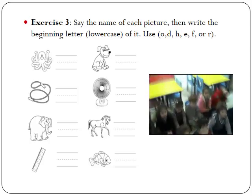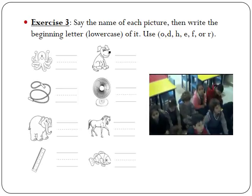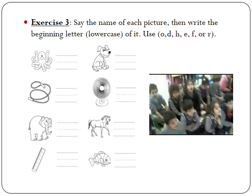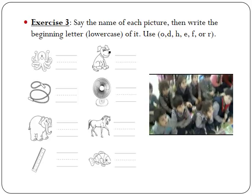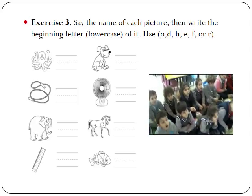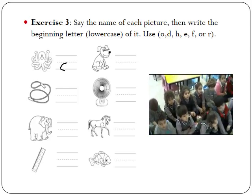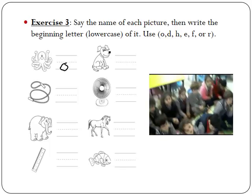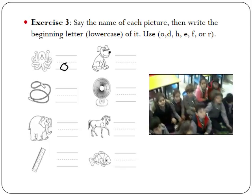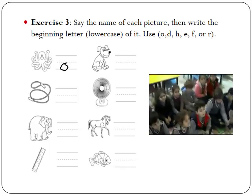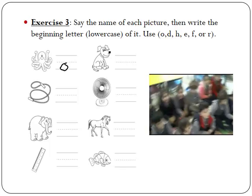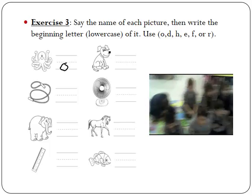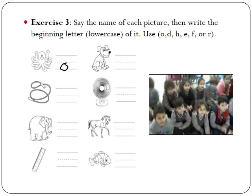What can you see in the first picture? Octopus. What sound does octopus begin with? O, O, O. The letter? O. What about the second picture? Dog. What sound does it begin with? D, D, D. What letter should I write? D.